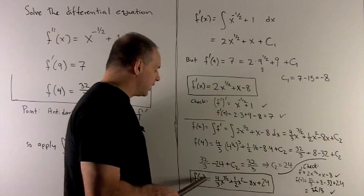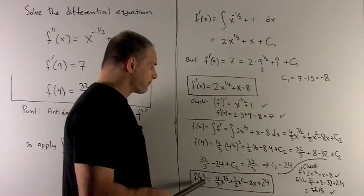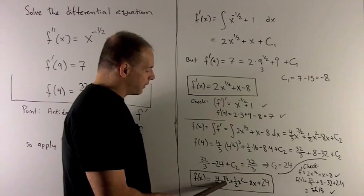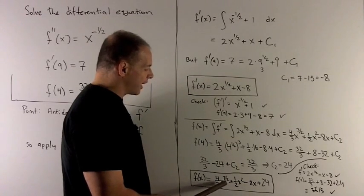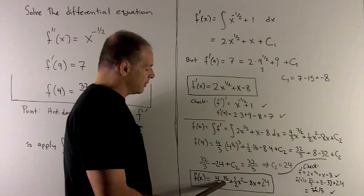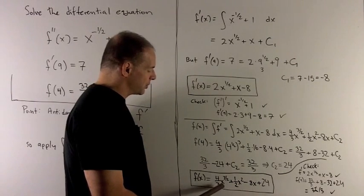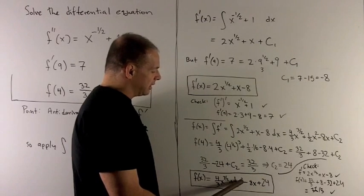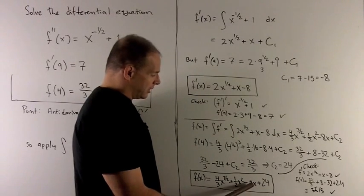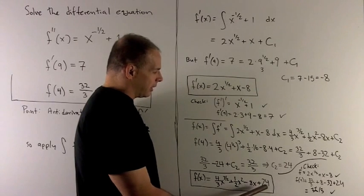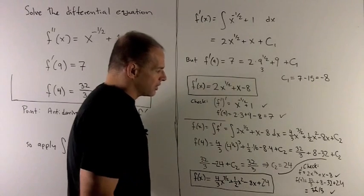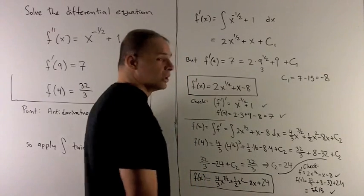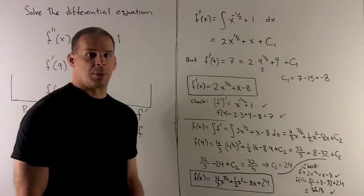If I stick 4 into here, we're expecting to get 32 thirds out. So 4 into this. Well, 4 to the 3 halves. Remember, we do the half first, so that gives me a 2. I raise that to the 3rd power gives me an 8, so I get 32 thirds. Put 4 into here. That's going to be 16 divided by 2 gives me 8. This is going to be minus 32. And then plus 24. You'll notice 8 plus 24 is 32, so all these terms go out, leaving me with 32 thirds as promised.